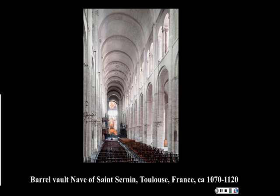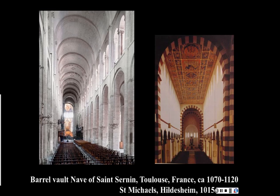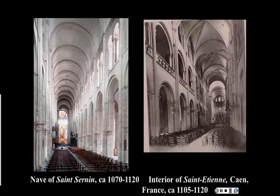Comparing Saint-Sernin to St. Michael's, above the nave we see a wood truss roof, and now they've basically created a large stone vault underneath it. They are going to get more intricate during the Romanesque period.